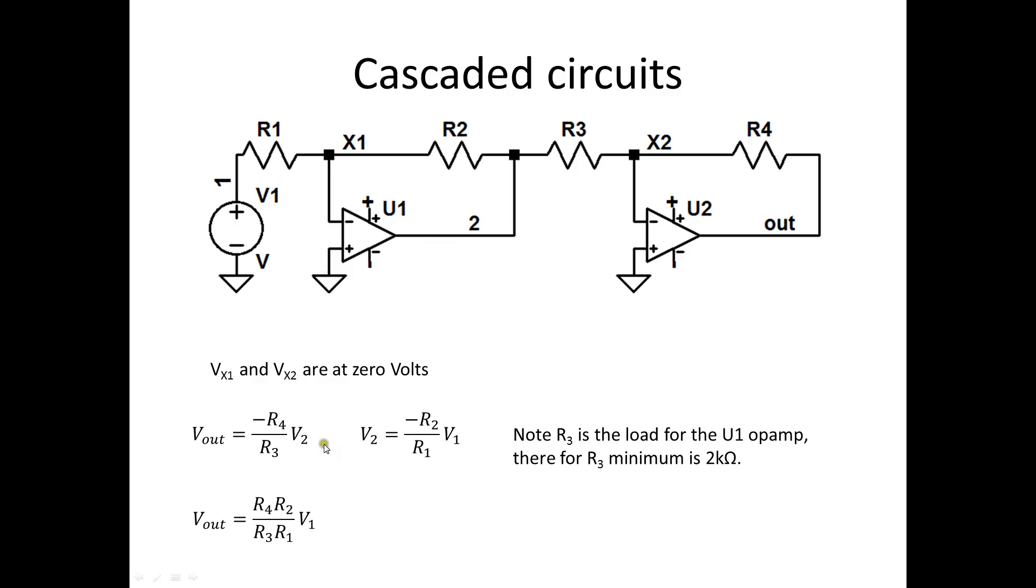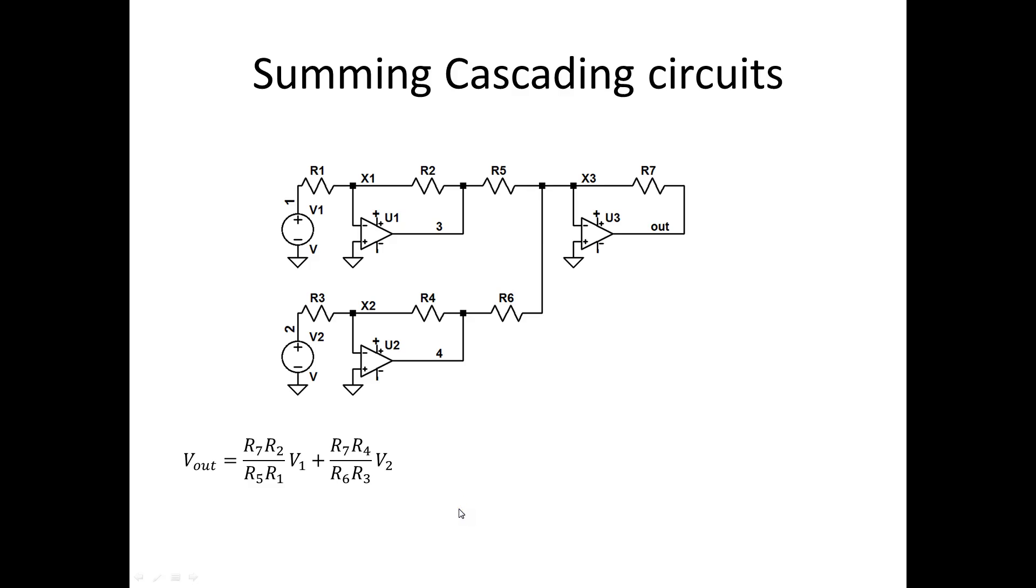Again, negative times a negative is a positive. R4 times R2, R3 times R1. Take that ratio and that's our output response. Now, let's try to tie even more concepts together with summing cascading circuits. And let's try to do this intuitively, superposition without a lot of slides.